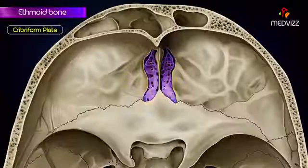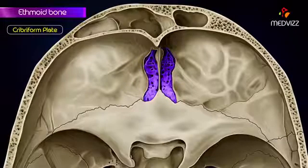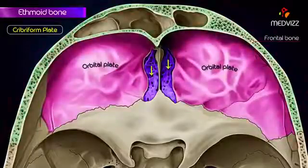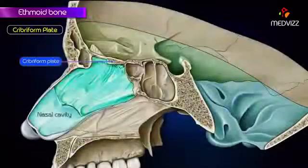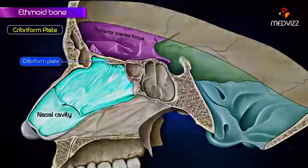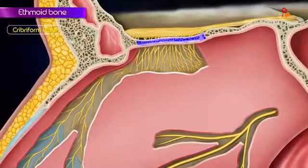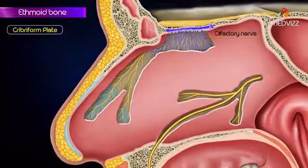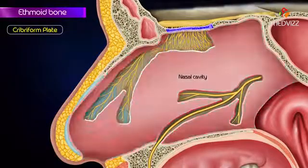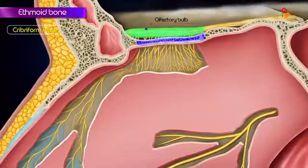The cribriform plate fills the ethmoid notch between the two orbital plates of the frontal bone and separates the nasal cavities from the anterior cranial fossa. It has a number of small pores which transmit the filaments of the olfactory nerve from the olfactory epithelium of the nasal cavity to the olfactory bulb of the brain.